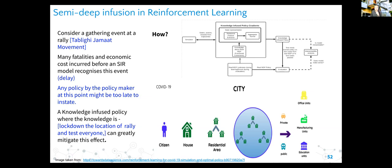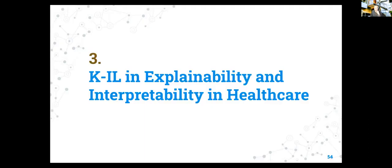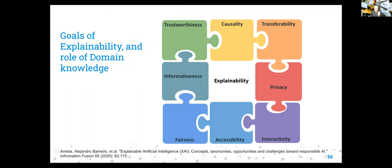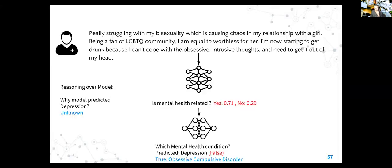We also have work on knowledge infusion into reinforcement learning. In the last part I'll discuss: explainability is very important and plays a role in many of the important themes in explainable AI. One example - is this text mental-health-related? The answer is yes. Then which mental health condition? It predicts depression - which is wrong. The correct answer is obsessive-compulsive disorder.